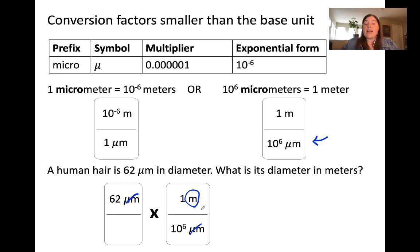When we do this in our calculator, we can divide 62 by 10 to the 6. This gives us an answer of 6.2 times 10 to the negative 5 meters. This makes sense because the human hair, if you think about a human hair relative to the length of a meter stick, a human hair is a very, very small number of meters. It's super tiny.